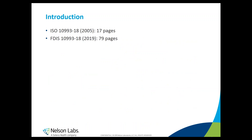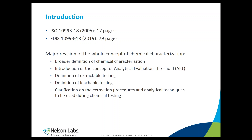We can directly see that the previous guideline was 17 pages, while the new guideline is 79 pages. There is a clear increase in content and a much more detailed approach. There is a major revision of the whole concept of chemical characterization, a broader definition of chemical characterization itself, and the introduction of the concept of an analytical evaluation threshold, extractable testing, and leachable testing, all coming from the pharmaceutical world.